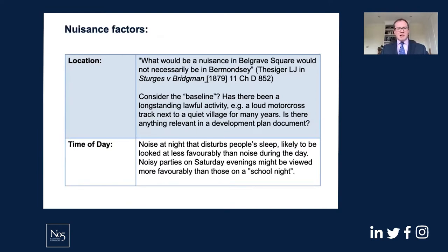Famously in Sturges v Bridgman, it was said that what would be a nuisance in Belgrave Square would not necessarily be a nuisance in Bermondsey. It's important to consider the baseline — for instance, has there been a long-standing lawful activity such as a loud motocross track next to a quiet village? If so, the noise landscape might be higher and the baseline for what's acceptable might be higher. It's also necessary to consider whether there's anything relevant in a development plan document, whether in the plan itself, an SPD, or in commentary.